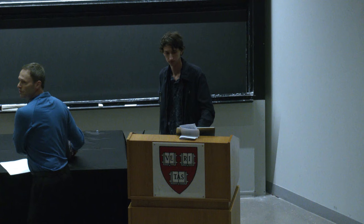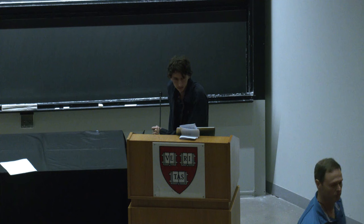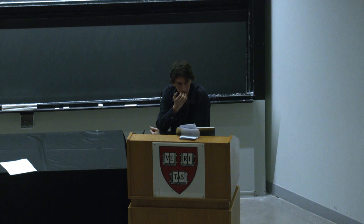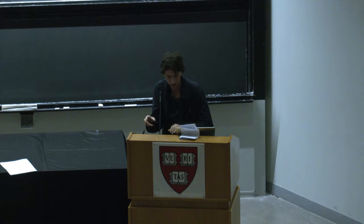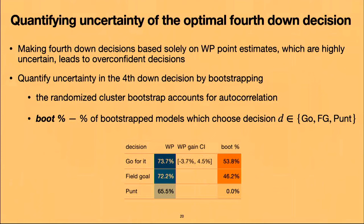Question: What exactly was the structure of that bootstrap? The response column looks like a one if the team with possession wins, zero if not, and these come in clusters of games. We did something called the randomized cluster bootstrap: first you resample games with replacement, and then within each game you resample plays with replacement.